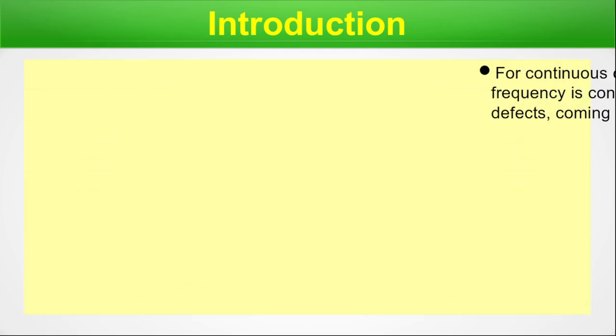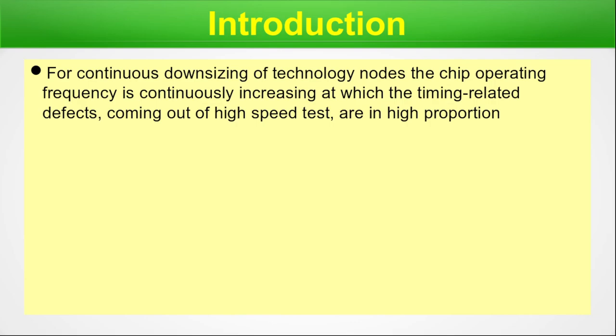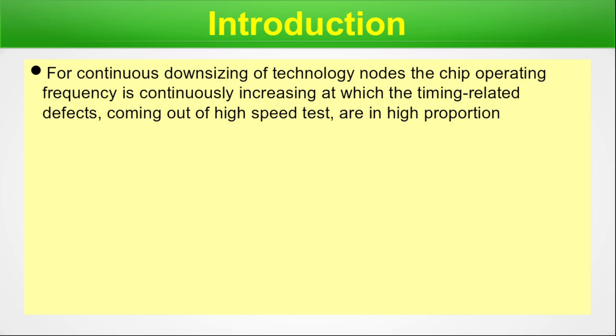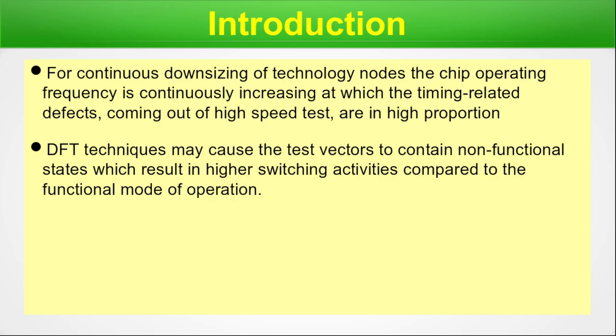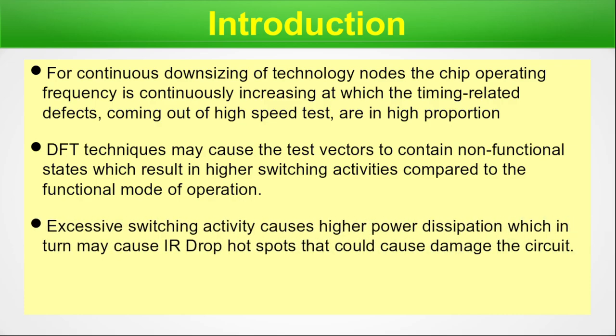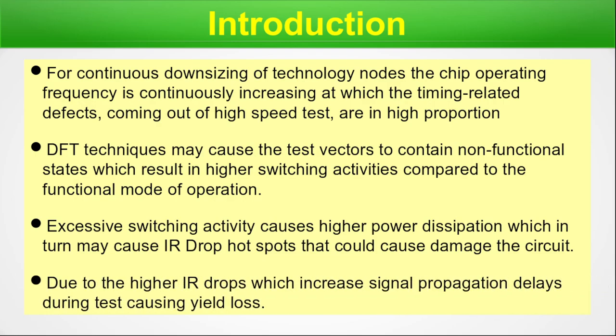For continuous downsizing of technology nodes, chip operating frequencies are continuously increasing, at which timing-related defects coming out of high-speed tests are high in proportion. Mobile phone processor GHz speeds increase with every new generation, and higher IR drops are very relevant for this high-speed switching operation. DFT techniques may cause test vectors to contain non-functional states resulting in higher switching activities compared to functional modes, and excessive switching activity causes higher power dissipation, which in turn may cause IR drop hotspots that could damage the circuit by increasing signal propagation delays during test, causing yield loss.